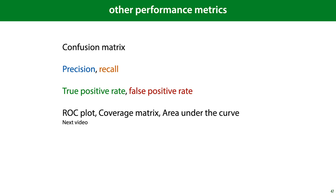One way of getting more insight into the way our classifier behaves under class imbalance and under cost imbalance is to look at different performance metrics. And we'll discuss in this video the confusion matrix, the precision and the recall, the true positive rate and the false positive rate. And in the next video, we'll look at the topics of ROC plots, coverage matrices and area under the curve metrics.